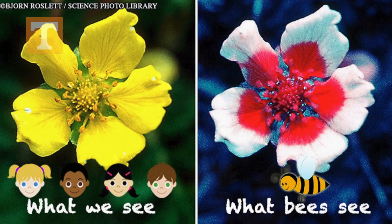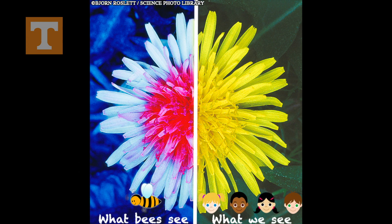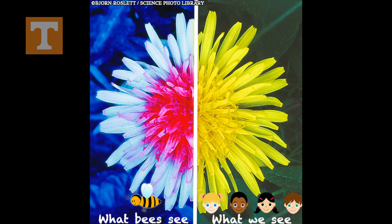Because pollinators, or insects, see in a different spectrum than we do, they can see special patterns that we cannot. Flowers often even display a bullseye pattern, further guiding pollinators to the right area.